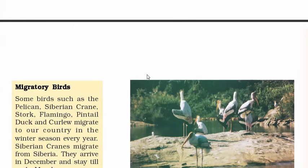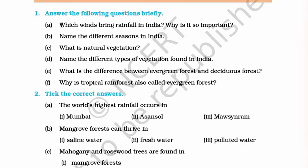With this we have come to the end of the final chapter of Geography Class 6 NCERT. Let's answer some questions. First question: which winds bring rainfall in India, and why is it important? The answer is southwestern winds — the winds that come from the southwest, that is the Arabian Sea. Kerala is the first state to witness rainfall. Rainfall is important for agriculture, irrigation, and for forests and vegetation to develop.